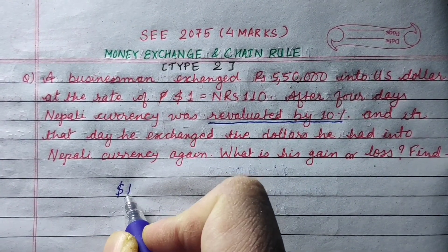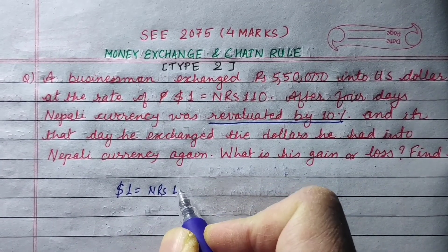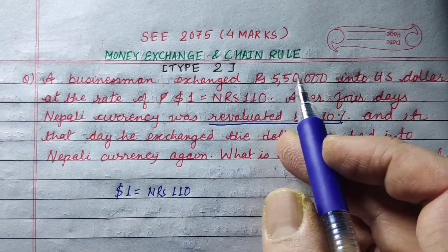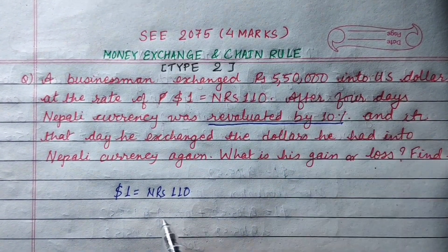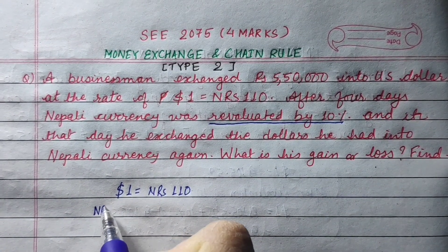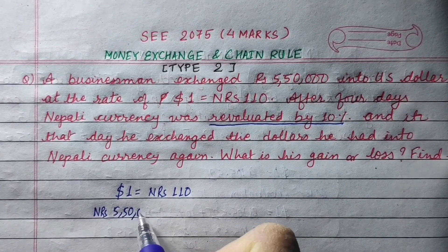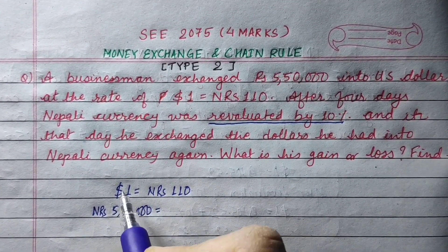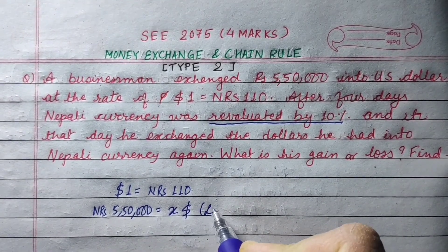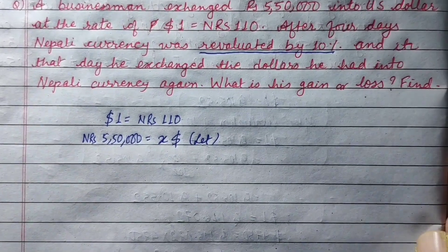We need to find the difference. We will put NRS here and convert 5,50,000 into US dollars. We will put the number of dollars to the dollar side and convert using the chain rule.